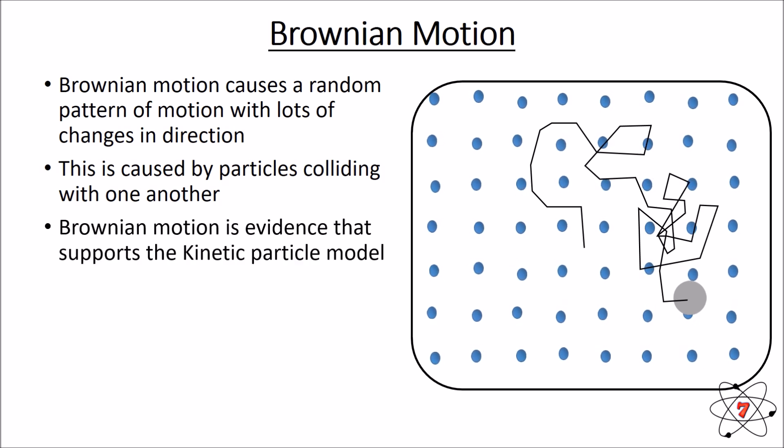So Brownian motion is evidence that supports the kinetic particle model. These observations from Brownian motion support what we know about the particle model. And as we heat particles up, they'll vibrate more and it will cause Brownian motion to become more extreme. Again, more evidence for the kinetic model.